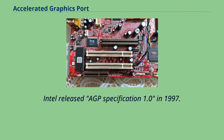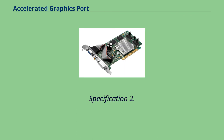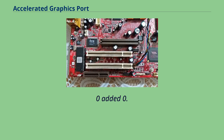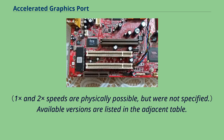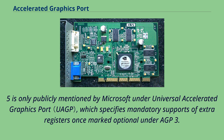Intel released AGP specification 1.0 in 1997, specifying 3.3V signals and 1x and 2x speeds. Specification 2.0 documented 1.5V signaling, which could be used at 1x, 2x, and the additional 4x speed; and 3.0 added 0.8V signaling, which could be operated at 4x and 8x speeds. Available versions are listed in the adjacent table. AGP version 3.0 is only publicly mentioned by Microsoft under Universal Accelerated Graphics Port, which specifies mandatory support of extra registers once marked optional under AGP 3.0.